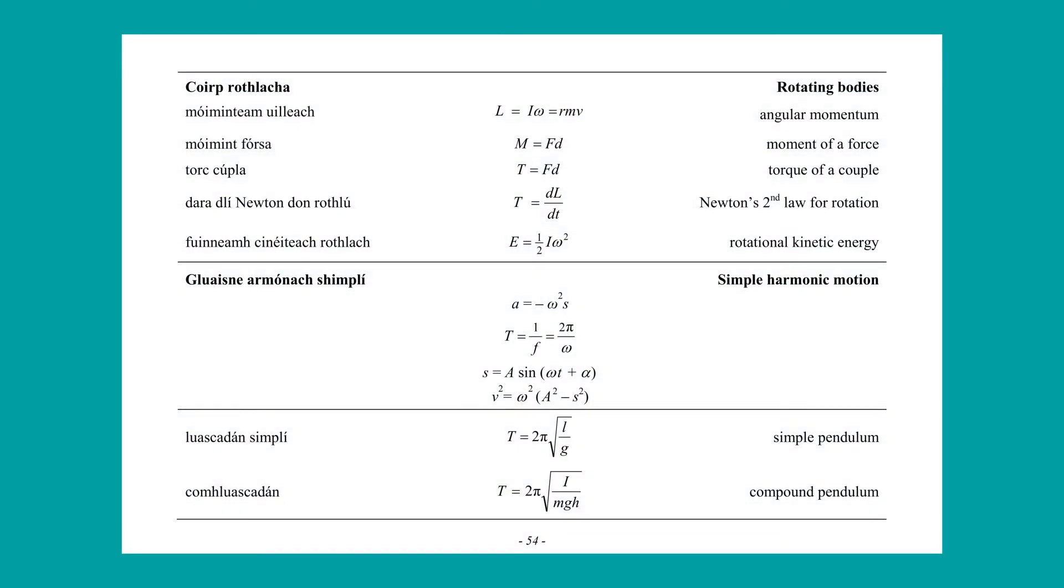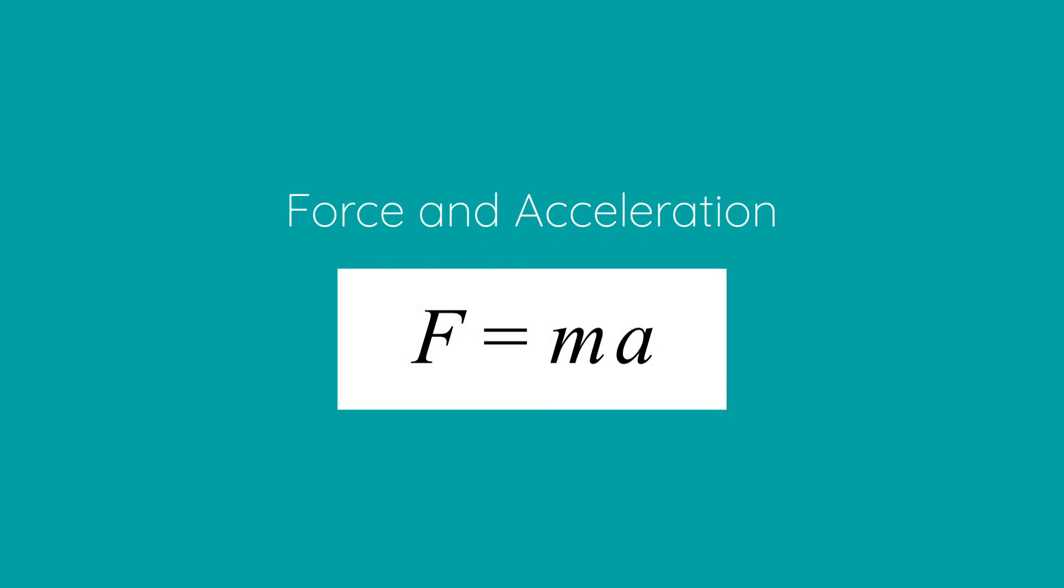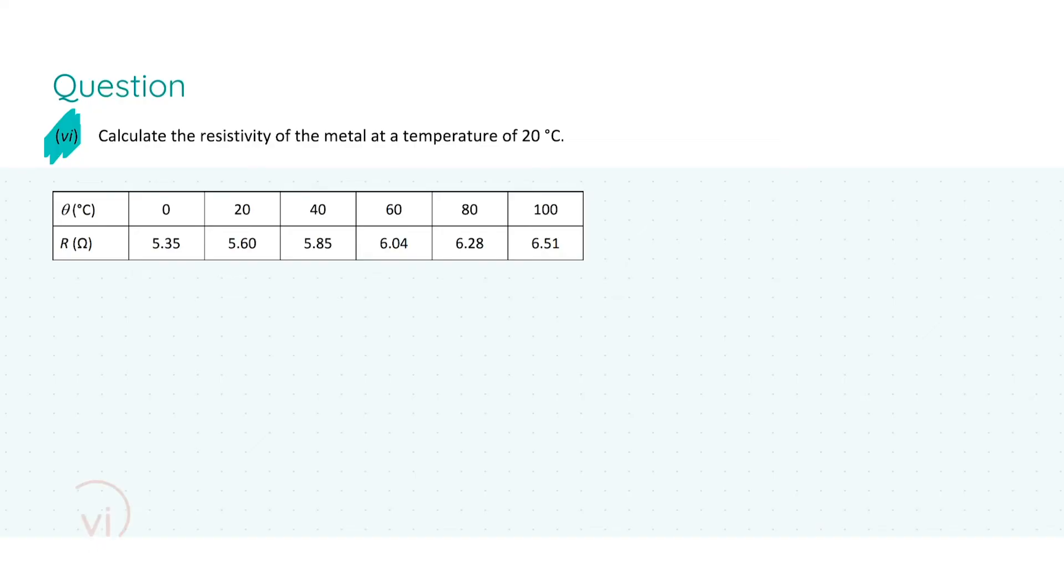Before moving on to part six, or the final part of the question, I want to draw your attention to page 61 of the formula and tables book for the resistivity formula. In part six, we're asked to calculate the resistivity of the metal at a temperature of 20 degrees Celsius. First things first, we're always going to write down the formula at hand, which is the resistivity formula. Just by copying this down or showing the examiner that you need to use this formula will get you three marks. Always put down every single formula you use because more than likely you will pick up marks for it.